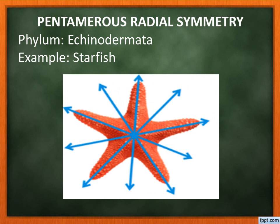Pentamerous radial symmetry is also radial symmetry, but two equal halves can only be obtained in five specific directions, not any direction. 'Penta' means five. This is especially present in Phylum Echinodermata. Example: starfish.